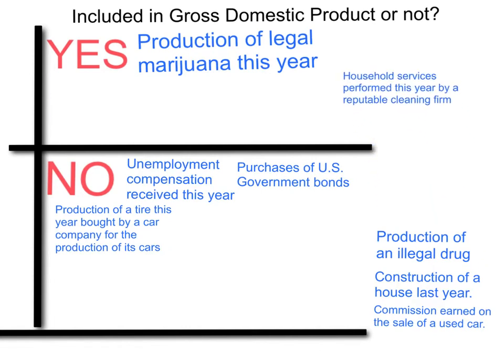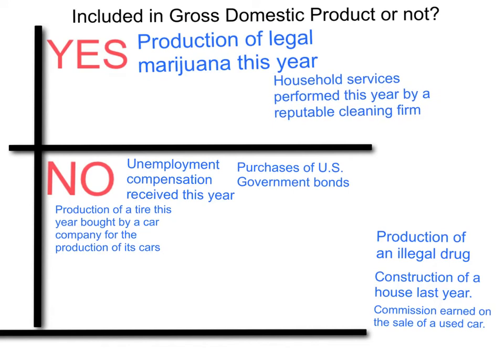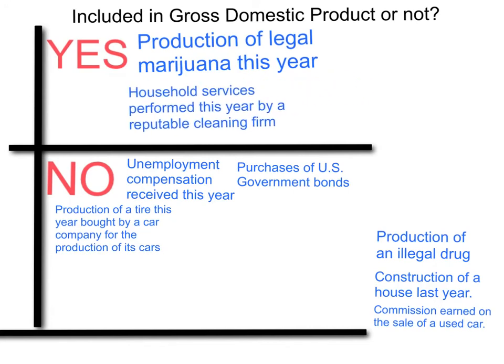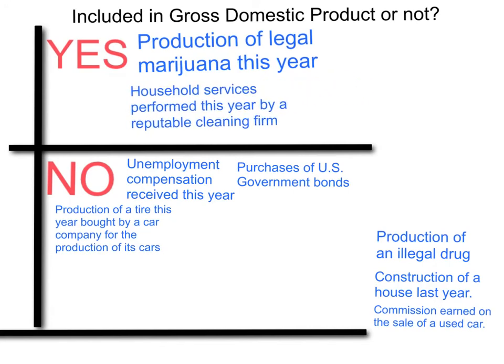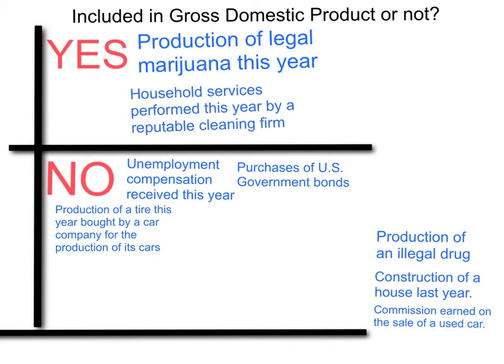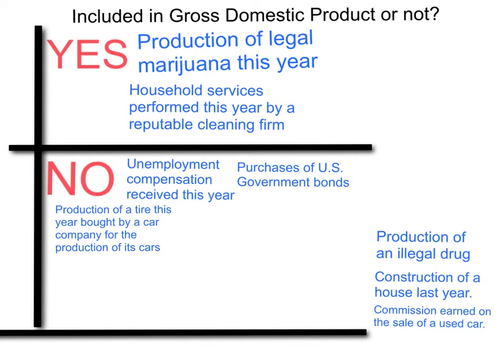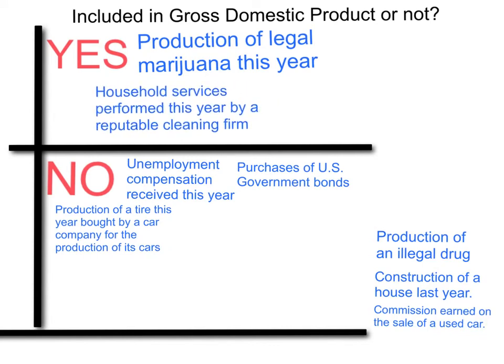Household services performed this year by a reputable cleaning firm — this is a final service. Final services are included, so we're going to put it in the yes column. This is a service; people were paid for it; it was reported. And it's done not just by individuals or housewives or househusbands, but by an outside company paid for. So it is included in GDP.